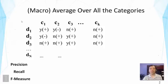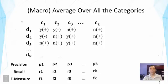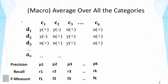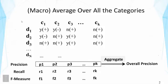For each category we're going to compute the precision, recall, and F1. For example, for category C1 we have precision P1, recall R1, and F value F1. Similarly we can do that for category C2 and all the other categories. Once we compute those, we can aggregate them — for example, we can aggregate all the precision values for all the categories to compute the overall precision, which is often very useful.